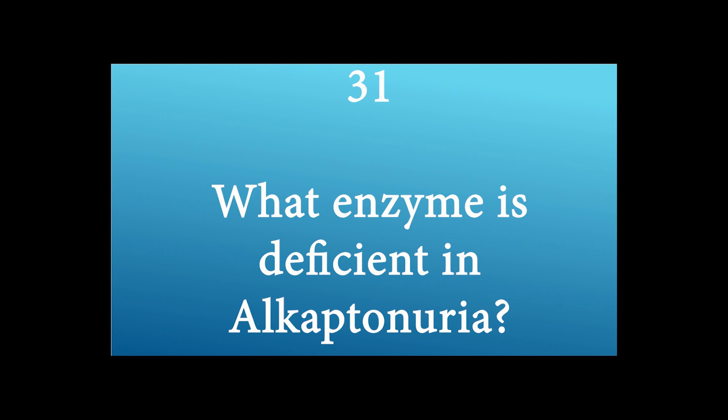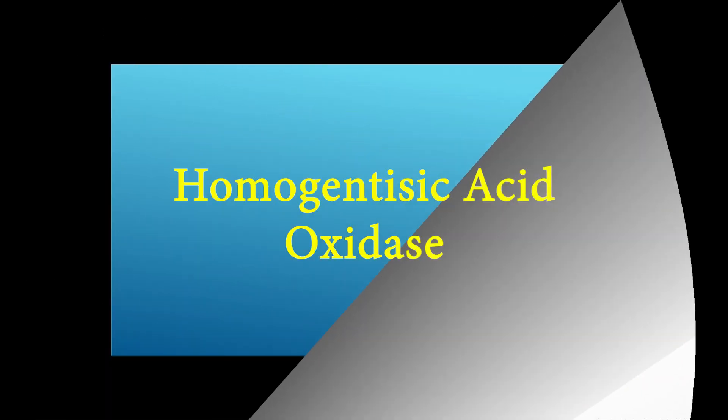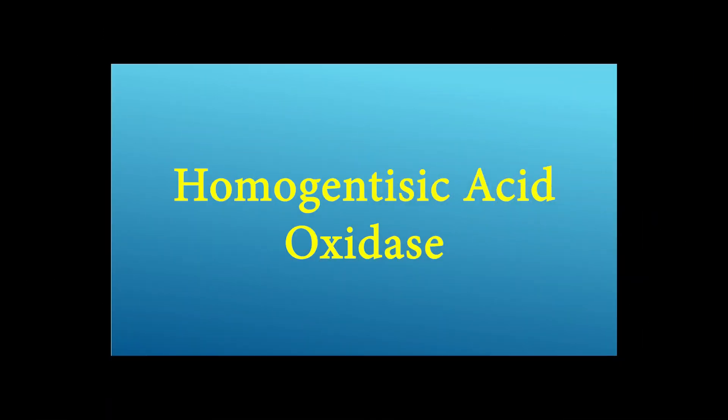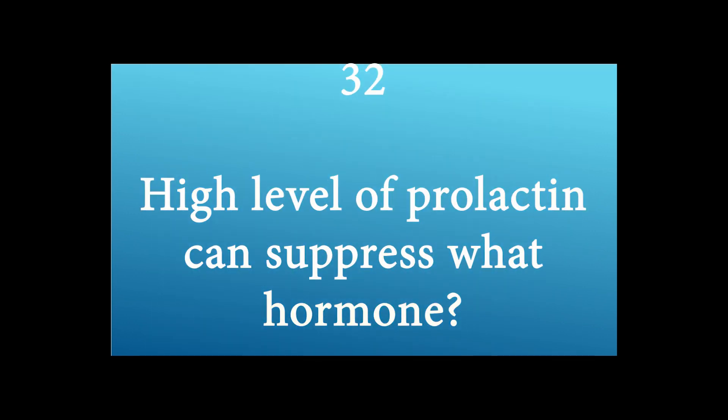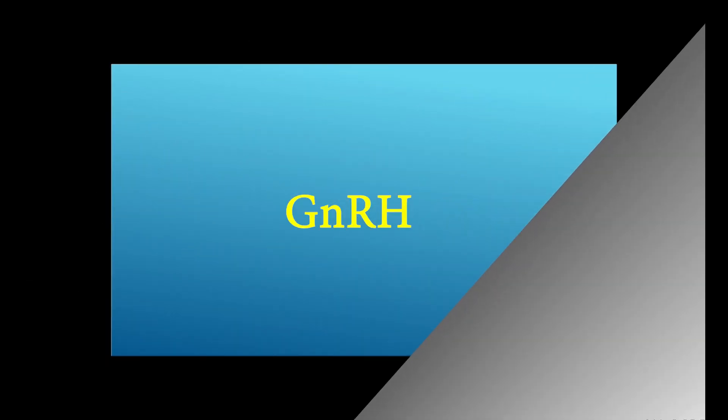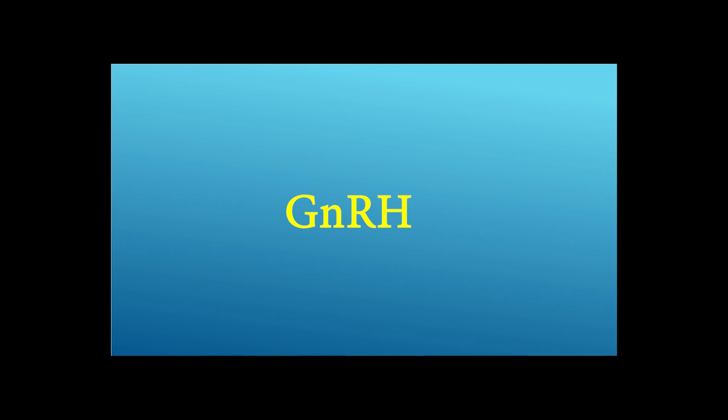What enzyme is deficient in alkaptonuria? Homogentisate oxidase. High levels of prolactin can suppress what hormone? GnRH.